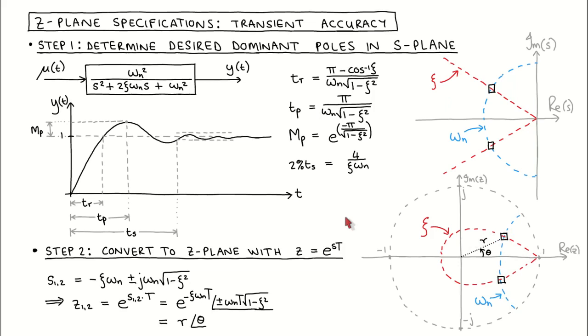This two-step procedure allows us to specify the transient response parameters and then calculate the desired dominant pole locations. Of course, if the system contains zeros and other poles, then the behavior of the full system might differ from that of the dominant poles, and it might be necessary to iteratively adjust the pole and zero locations until the full system's transient response is satisfactory.